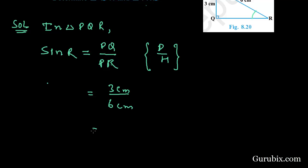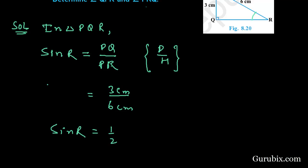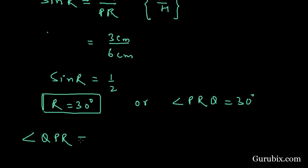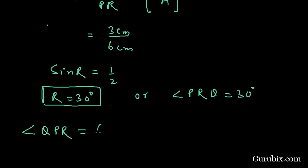This equals 1 over 2, so sine R equals 1/2. This means R equals 30 degrees, or we can say angle PRQ is 30 degrees. Therefore, angle QPR is equal to 60 degrees.